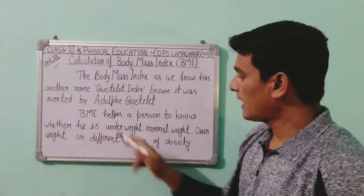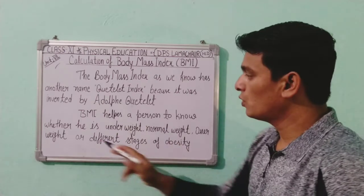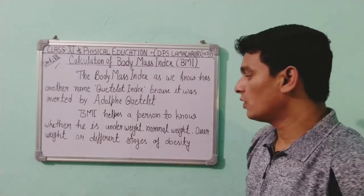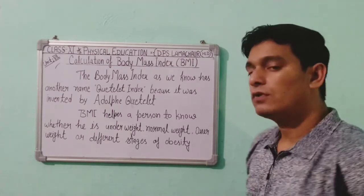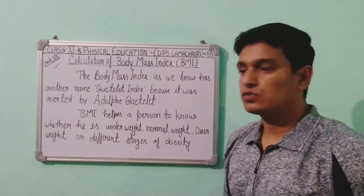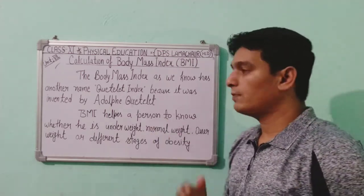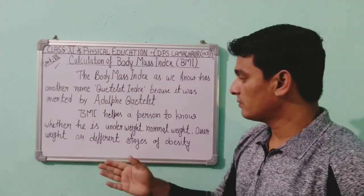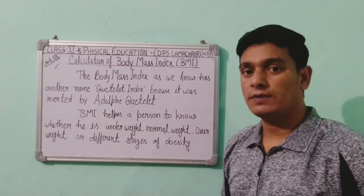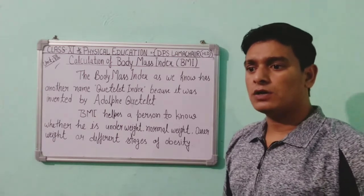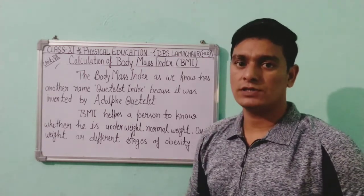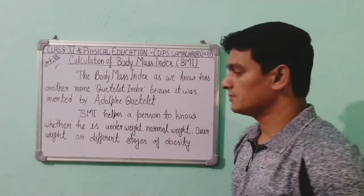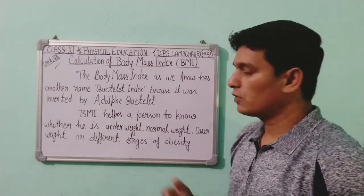BMI helps a person to know whether he is underweight, normal weight, overweight, or at different stages of obesity. With the help of BMI, a person can know about his weight status. It was divided into different stages, so let's know a little more about it.